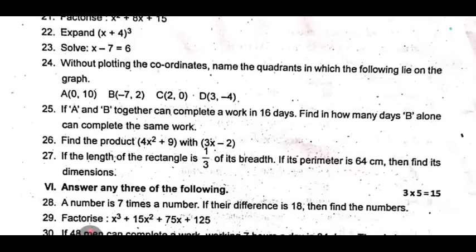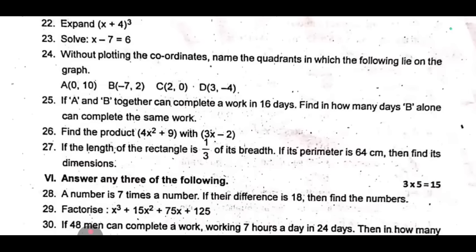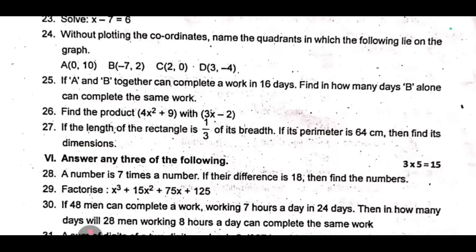27th one, if the length of the rectangle is ⅓ of its breadth, if its perimeter is 64 cm, then find its dimensions. This is going to be 5 marks.